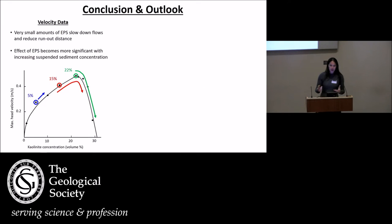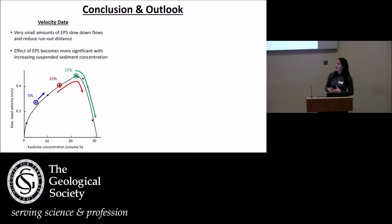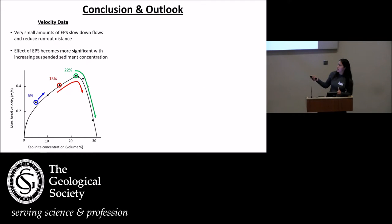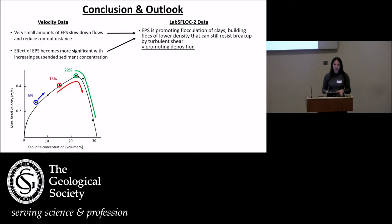To conclude: very small amounts of EPS are able to slow down flows and reduce the run-out distances greater than anticipated, and the effect of EPS becomes more significant with more sediment concentration — small at low concentrations, but much more significant at high concentrations. These results are because of how EPS promotes the flocculation of clays, building flocs of lower density that can still resist breakup by turbulent shear experienced in a sediment gravity flow.